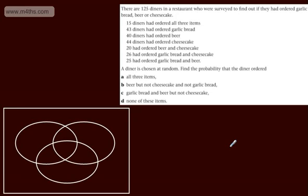In this question, we're told there are 125 diners in a restaurant who were surveyed to find out if they had ordered garlic bread, beer, or cheesecake.